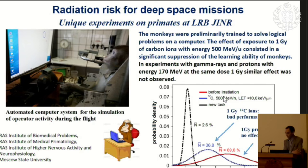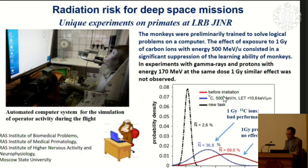We tried to establish unique experiments on more complex animal models, like monkeys, involving a big collaboration of different institutions. They constructed specific computer test systems where animals were pre-trained to solve a variety of different tasks, similar to the operator activity in a space crew. In experiments with low-dose gamma rays and protons, animals behaved almost normally. But with irradiation of their brain with carbon ions at the same dose, we got almost twice the reduction in cognitive functions and learning abilities.